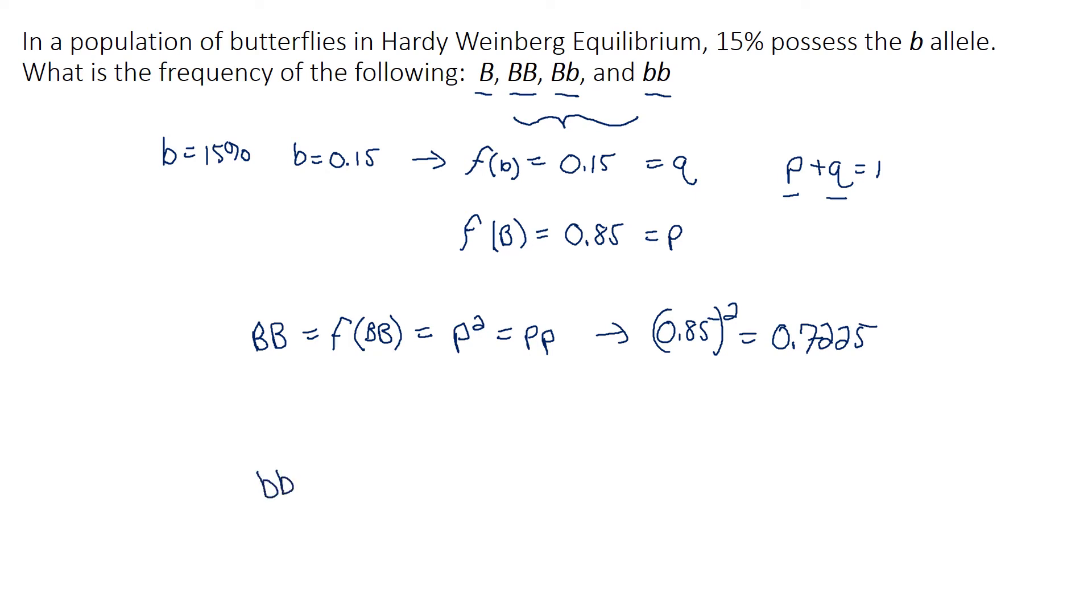So I calculated that to be 0.7225. Now I'm carrying all these decimal places, I am going to round up later. So then we've got the homozygous dominant. Now we can find the homozygous recessive quite easily as well. That's the frequency of little b little b, which is the homozygous recessive genotype, and that's like saying Q squared, which is the same as Q times Q. So then we get 0.15 squared equals 0.0225.